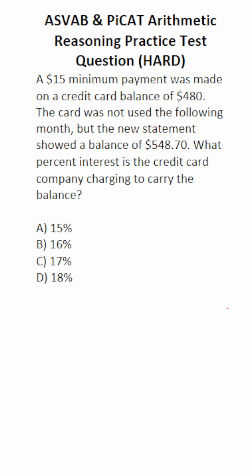This arithmetic reasoning practice test question for the ASVAB and PiCAT says a $15 minimum payment was made on a credit card balance of $480. The card was not used the following month, but the statement showed a balance of $548.70. What percent interest is the credit card company charging to carry the balance?